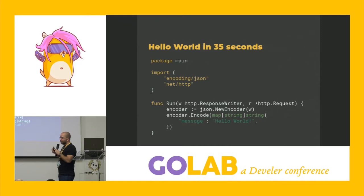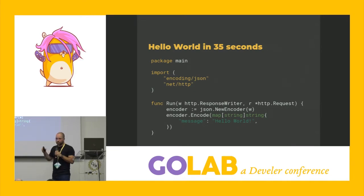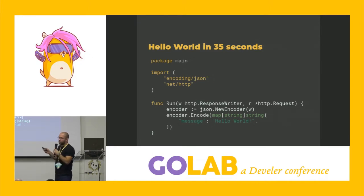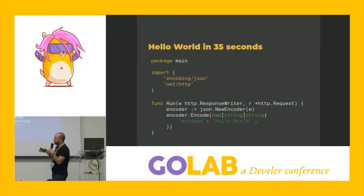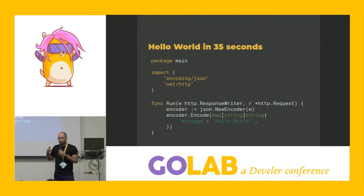Let's take a look at something a little bit more complex — something that actually works. This is code that the GitLab serverless platform supports right now. It's a run function that takes an HTTP response writer and an HTTP request, which makes this function the HTTP handler function. It will encode some message, and the function is going to modify the response writer so that whenever you invoke it, it responds with a JSON payload message: hello world.